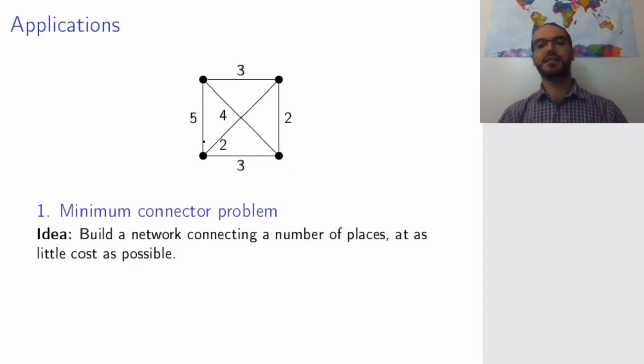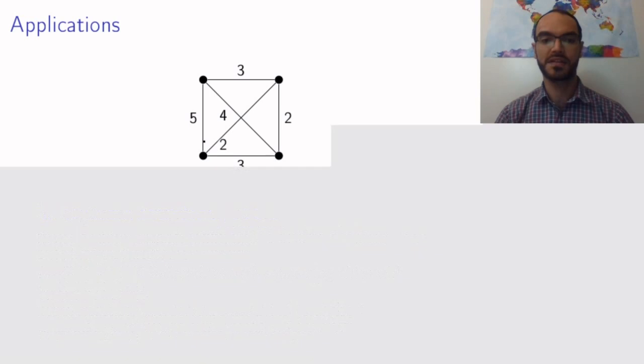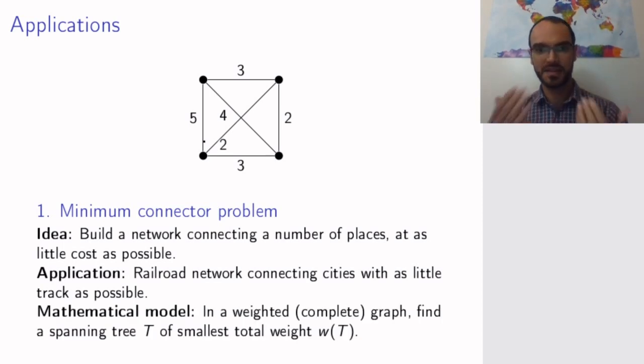The idea is that you can build all these railroads that I have drawn in the graph, but that's unnecessary and costs too much. If you just build enough edges so that all vertices are connected, then everyone can still get to every other vertex, maybe changing trains once or twice. The mathematical model is that in a weighted graph we want to find a spanning tree of the smallest total weight.